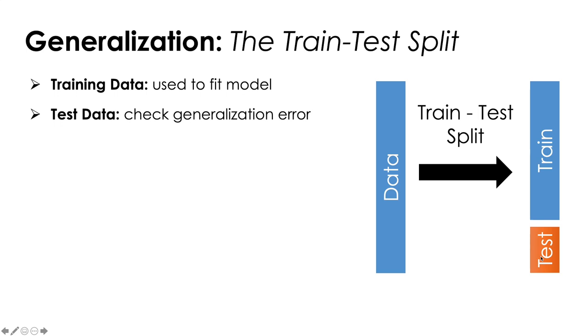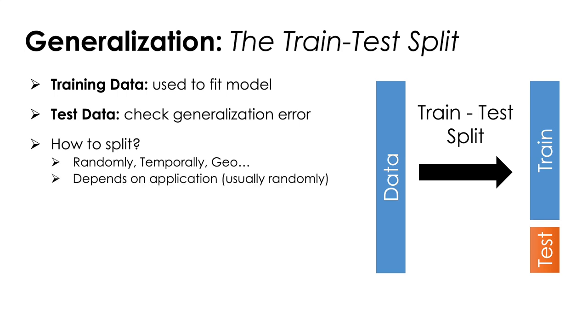So maybe the first challenge is how should I split my data? You could imagine splitting it randomly, temporally, or if it were geographic data, you might split it by region. Really, this is going to depend on the application. We could split the data randomly. That's a pretty common strategy. We would shuffle the data and choose a random fraction. The next question is what fraction? A pretty standard technique might be something like 90% of our data will be kept as training data and 10% will be kept as test data.